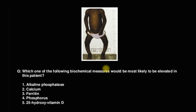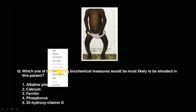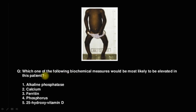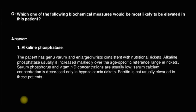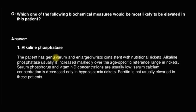This is a picture of a patient with rickets. Which of the following is most highly elevated in this condition? The patient presents with genu varum — a varus deformity. The probable elevated finding is alkaline phosphatase. Other values — calcium, ferritin, phosphorus, 25-hydroxyvitamin D — will all be reduced. Because the patient presents with genu varum and nutritional rickets, alkaline phosphatase is increased. Note: ferritin is not usually elevated in these patients.